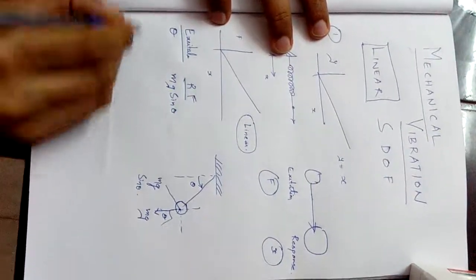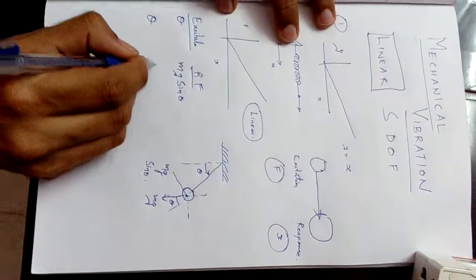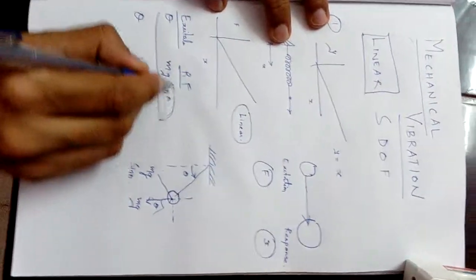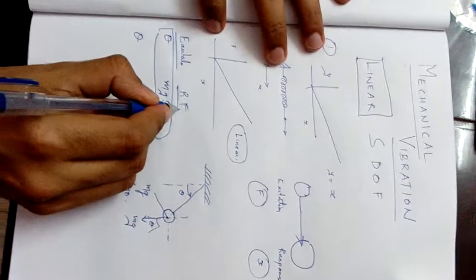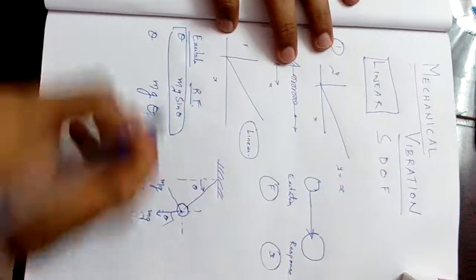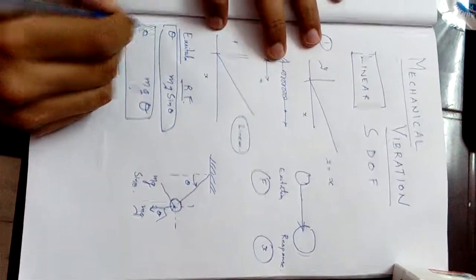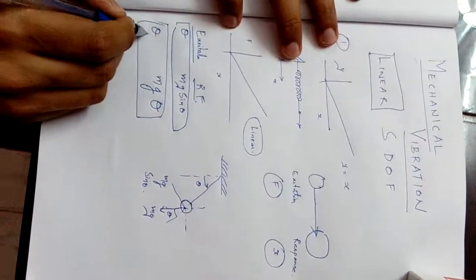If theta is small, then sin(theta) is approximately equal to theta. In this case, your restoring force is linear with respect to the excitation you're providing. This is an example of a linear system.